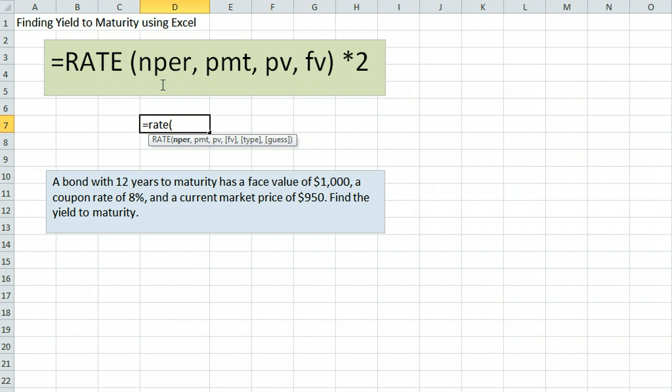This bond has 12 years to maturity. We are going to assume that it makes semi-annual interest payments, which means in 12 years there will be 24 payments.